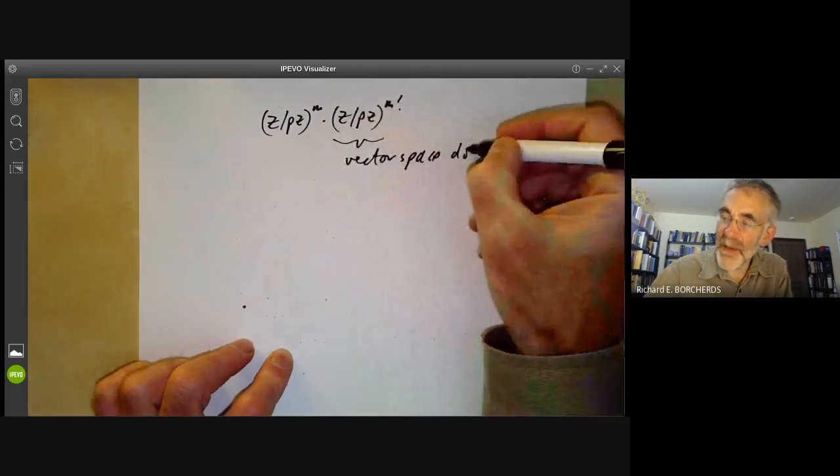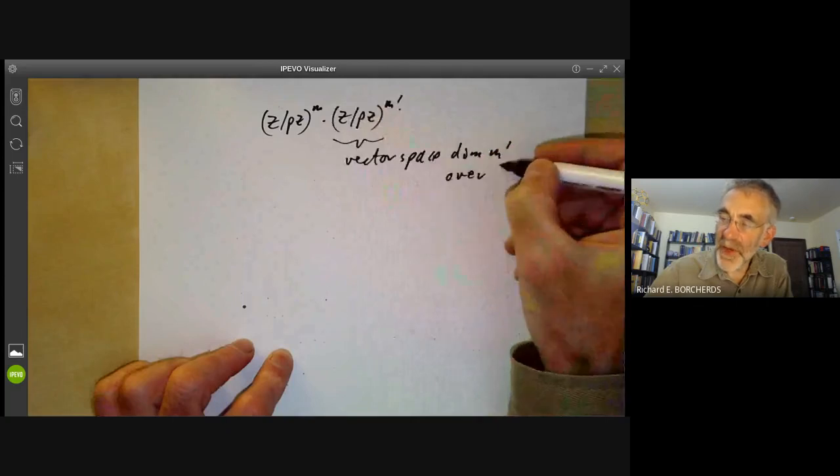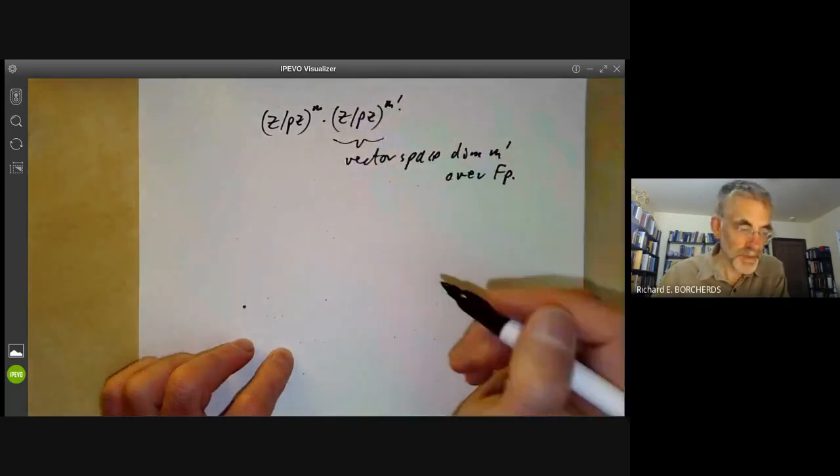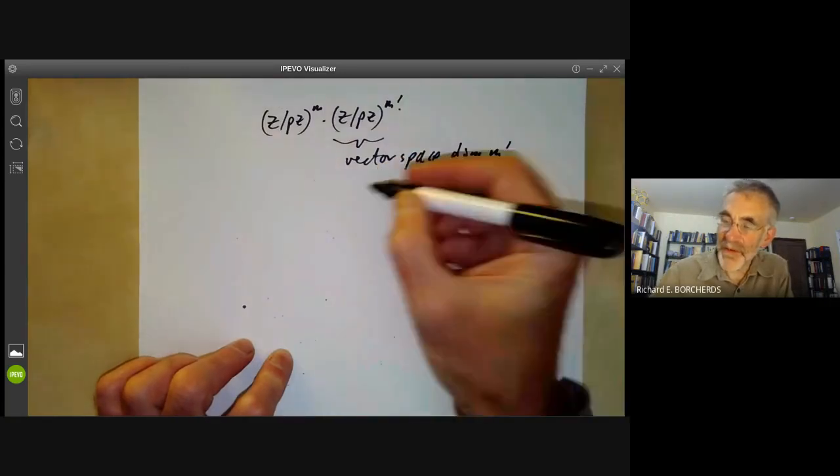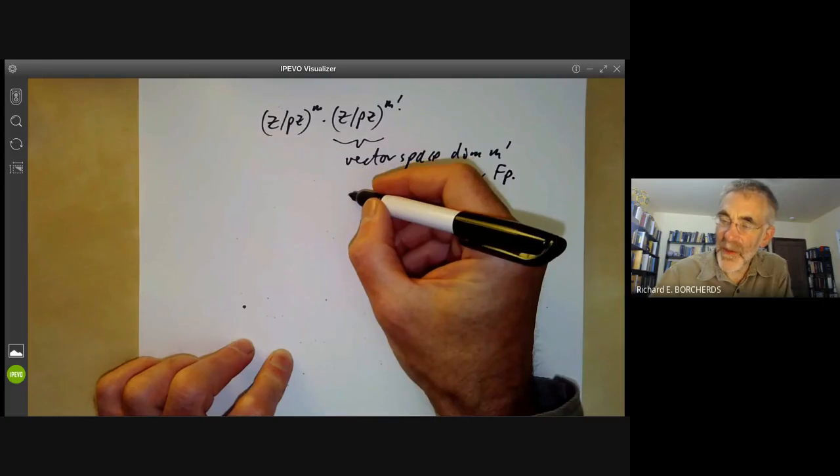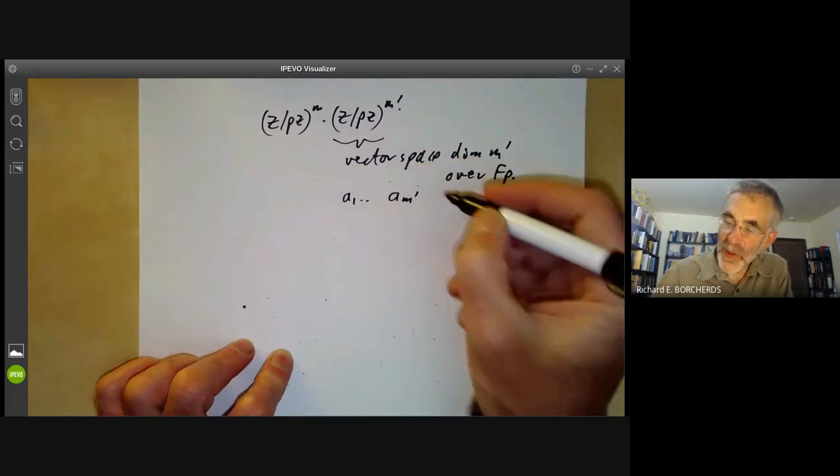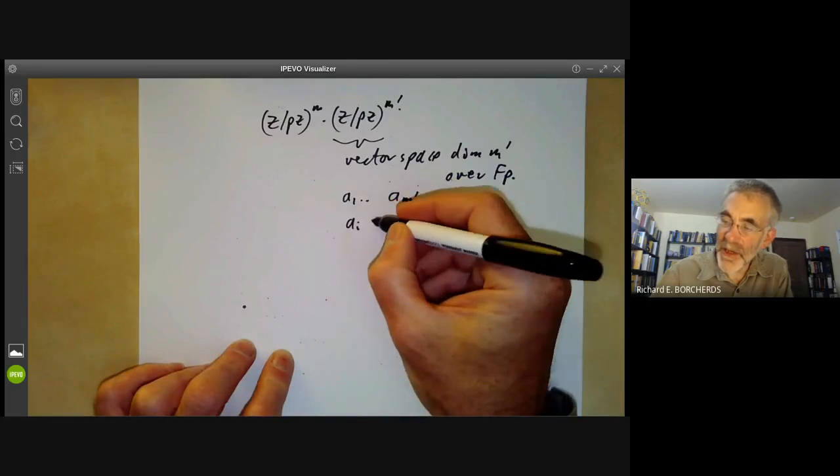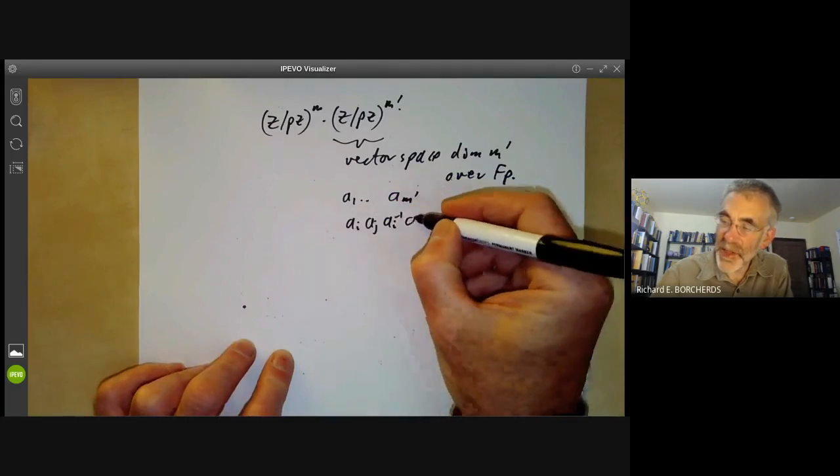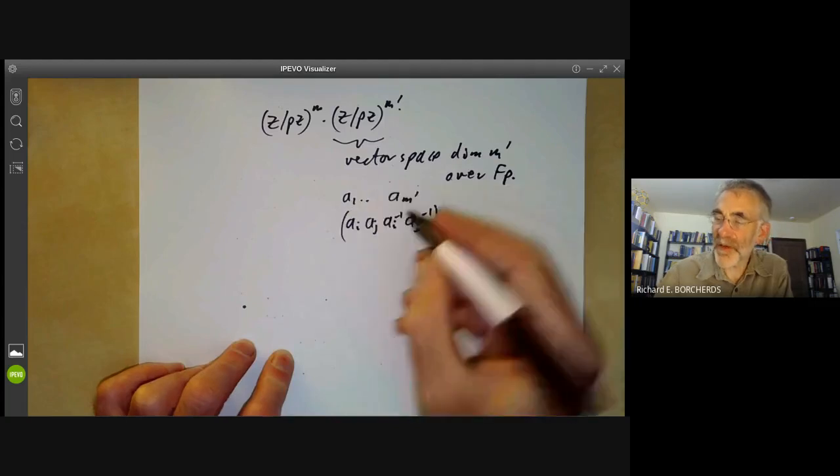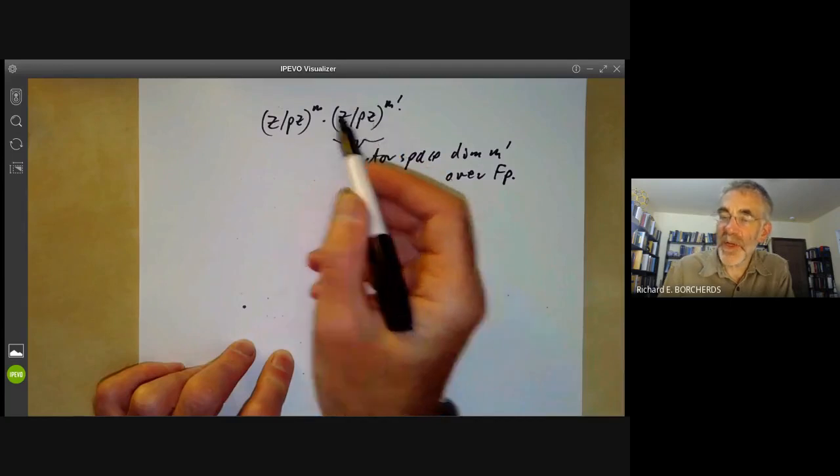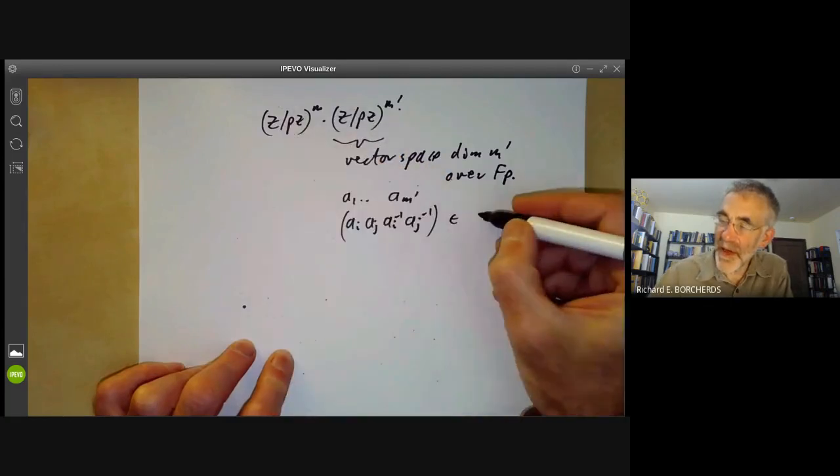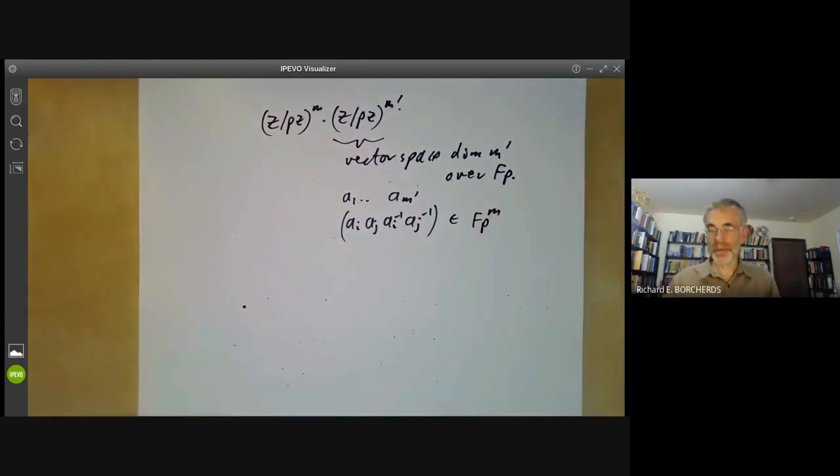And we can think of this as being a vector space of dimension m prime over the field of p elements. We can pick a sort of basis for this, so we have a basis a1 up to a_m prime. We can look at what are all the elements ai aj ai inverse aj inverse, so we take the commutator. Since this is abelian, the commutator must lie in the center, so this is in Fp to the m for some m.